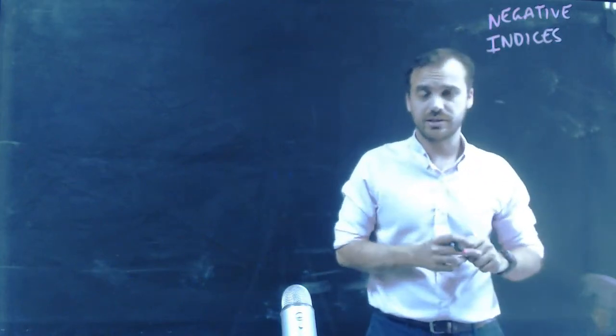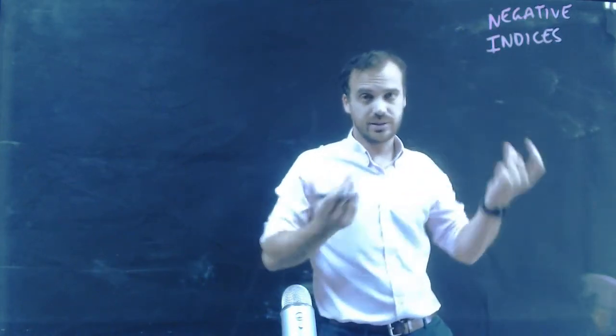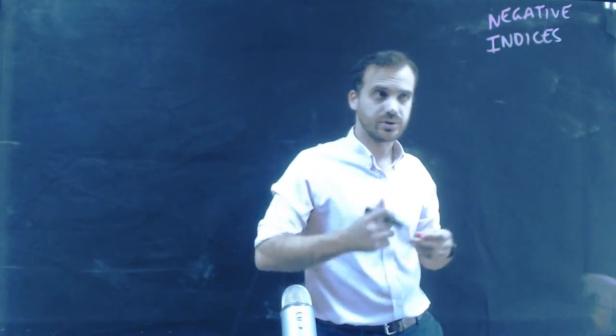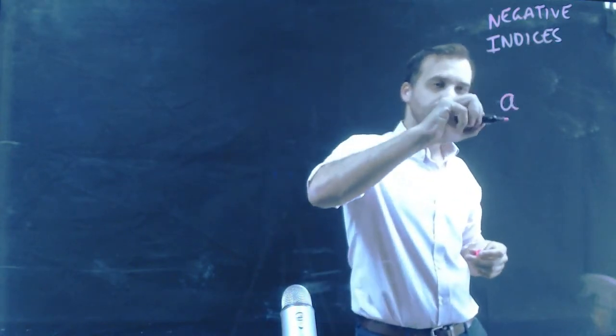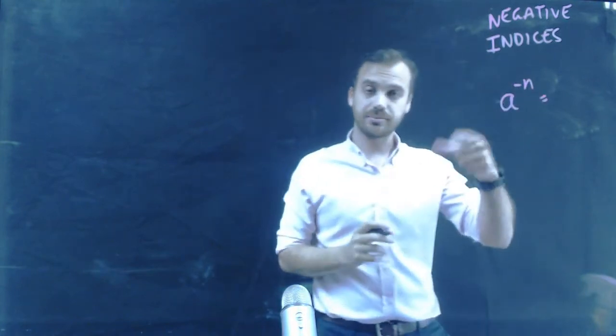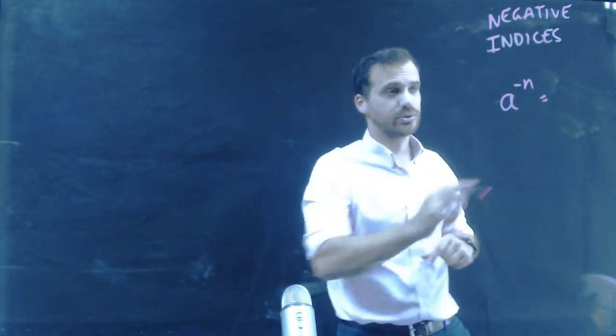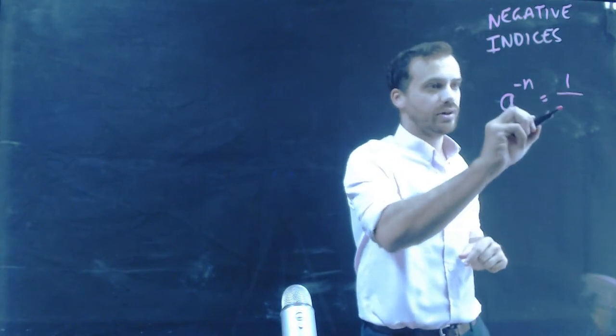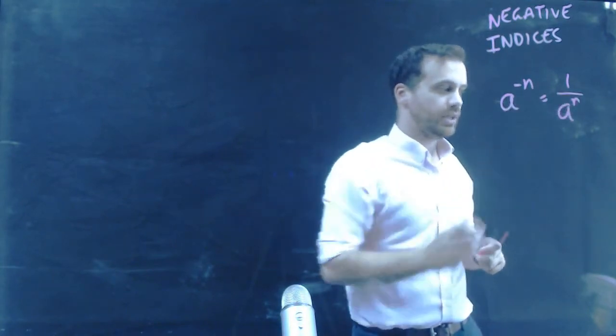Alright, so this one's about negative indices. The power is negative. How do we deal with it? So, that's a to the power of negative n. Now, a to the power of negative n is equal to 1 over a to the power of n.